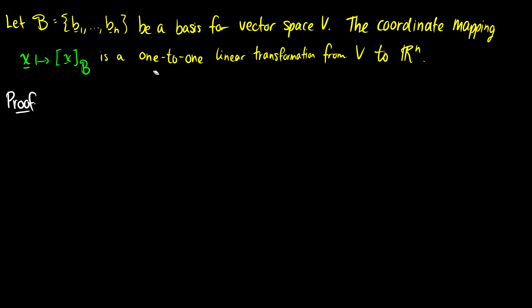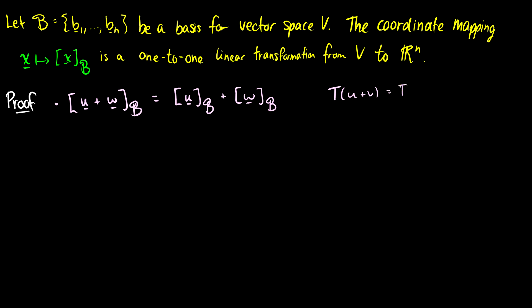There are two requirements for a linear transformation. The first one: we need to show that if we have vectors U plus W relative to B, this is the same thing as the vector U relative to B plus the vector W relative to B. This is analogous to saying T of (U plus V) equals T(U) plus T(V), except we're using different notation — square brackets with the relative-to-basis subscript instead of a transformation T.